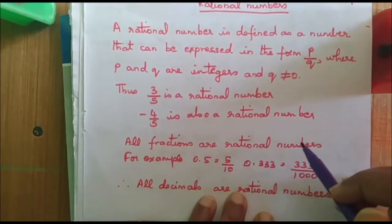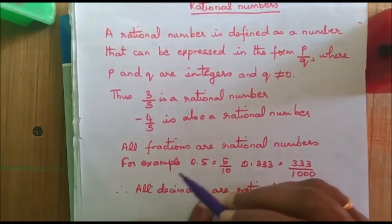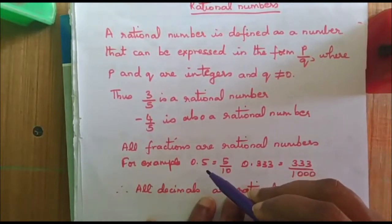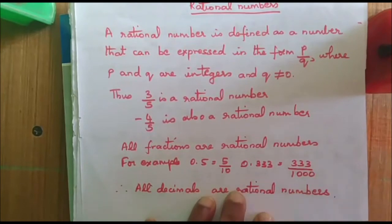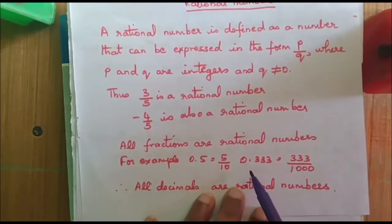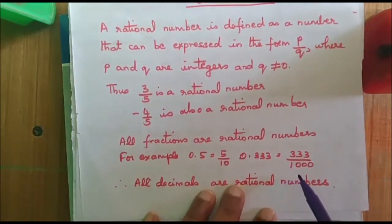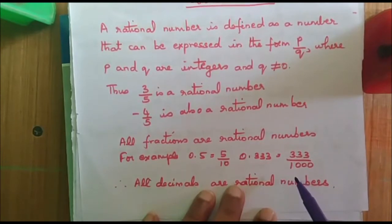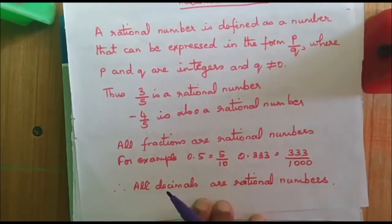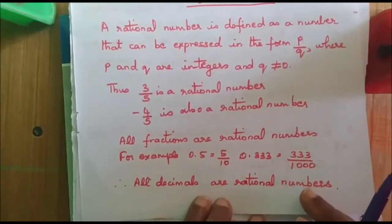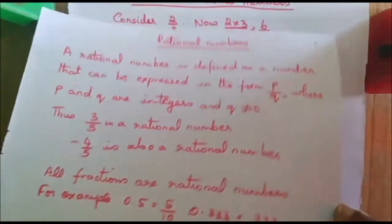All fractions are rational numbers. For example, I am given 0.5, I can write it as 5 by 10. Similarly, 0.333 can be written as 333 divided by 1000. So, we can represent decimal numbers also as rational numbers or as fractions. Therefore, all decimal numbers are rational numbers. I hope you understood this part.